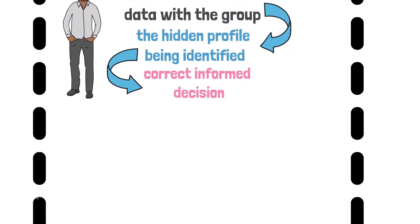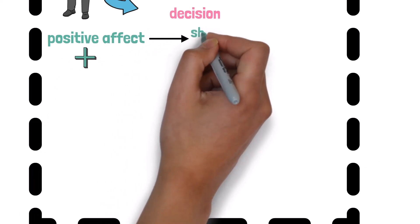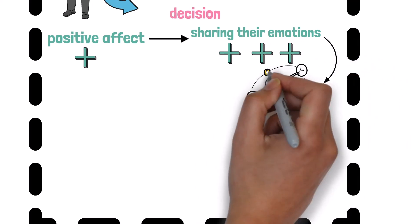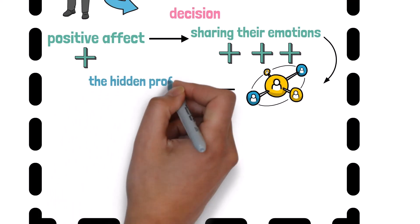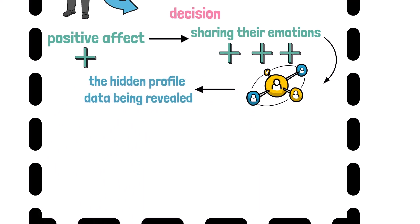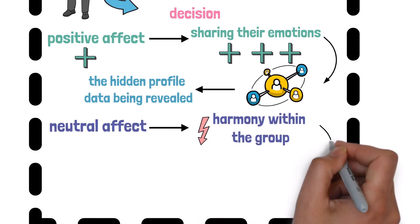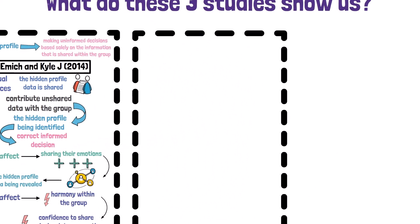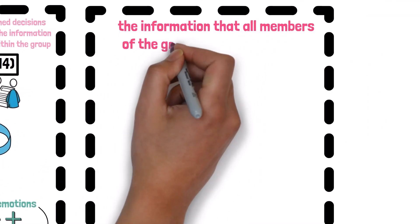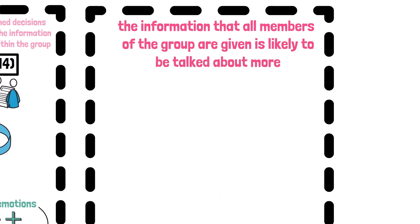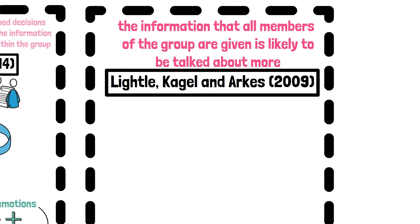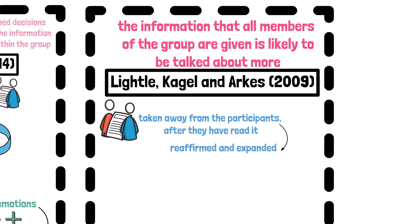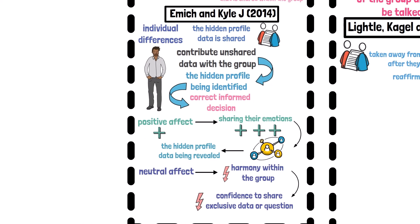Similarly, Emich and Kyle in 2014 also found that positive affect can lead to group members subconsciously sharing their emotions and mimicking one another to create group harmony. This harmony leads to greater cooperation and confidence within the group, increasing the likelihood of the hidden profile data being revealed. Those experiencing neutral affect will lack harmony, decrease confidence to share exclusive data, or question other group members. It has also been noted that during group decision-making, information that all members share is likely to be talked about more — a concept furthered by Lightle, Kagel, and Arkes in 2009, who found that when information is taken away after reading, shared information will be reaffirmed and expanded by others.